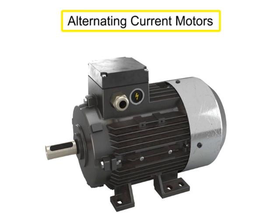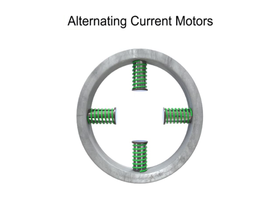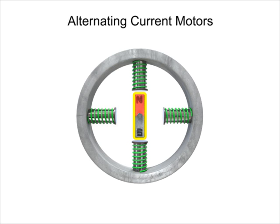Alternating current motors function based upon the principle of having polarities within a rotating magnetic field. Inside an AC motor are housed stationary electromagnetic coils, or stators, positioned around a movable magnet called a rotor.